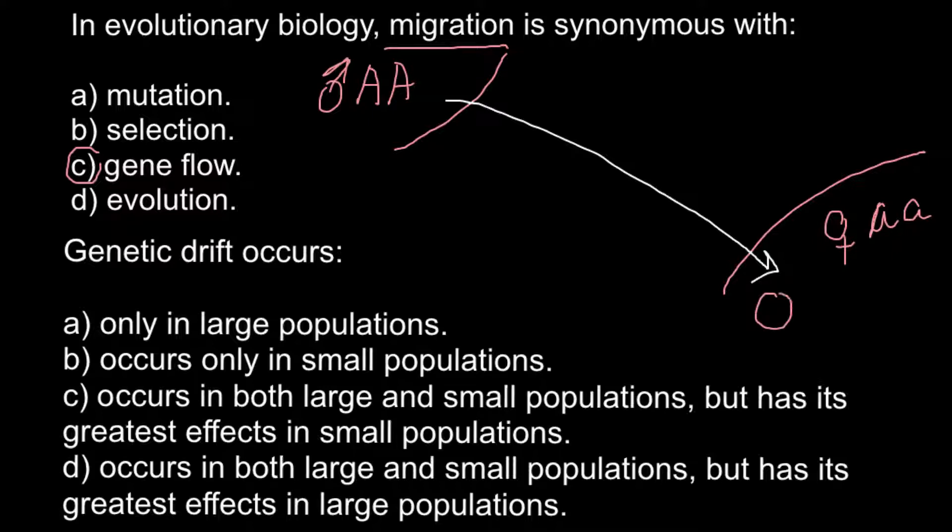now we would have different allelic frequencies here. So here we would have this male who migrates here. And before we had only these two small alleles a. And now we have also two capital alleles A. So,